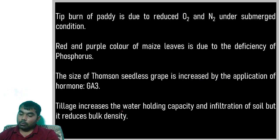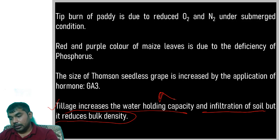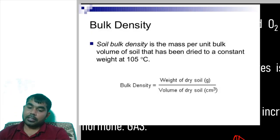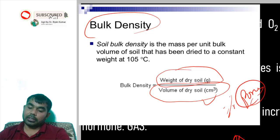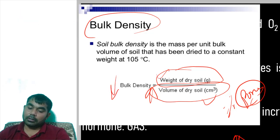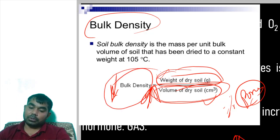Tillage increases the water holding capacity and infiltration of soil, but it reduces bulk density. Bulk density equals mass divided by volume. When you till, the percentage of pores increases, so volume increases. With the same mass but increased volume, bulk density decreases. This is a desirable characteristic because we need low bulk density in soil.